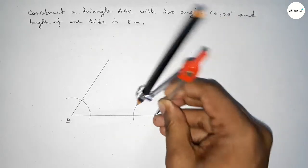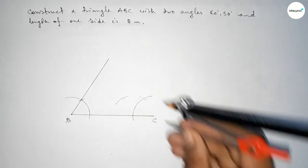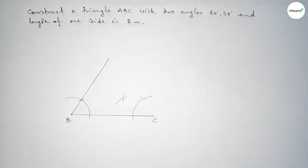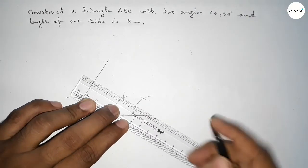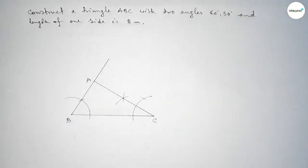Putting the compass here and drawing arcs with the same length, creating intersections where the curves meet. Now joining this to get the 30-degree angle, and both lines intersect at point A.